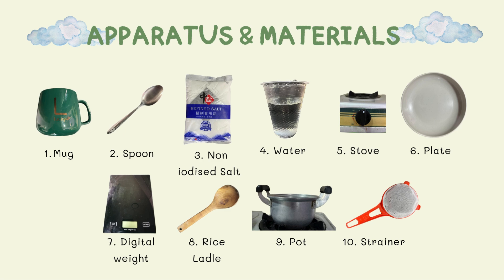To demonstrate this process, we need the following apparatus and materials: first, a mug; second, a spoon; third, non-iodized salt; fourth, water; fifth, a stove; sixth, a plate; seventh, a digital scale; eighth, a rice ladle; ninth, a pot; and lastly, a strainer. Each of these items is essential for creating the conditions needed to observe the crystallization of sodium chloride.